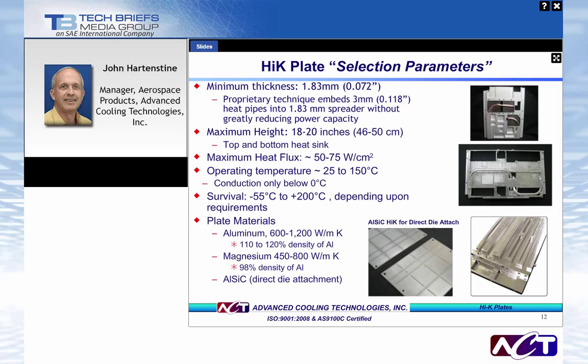Selection parameters for high-K plates include high-conductivity passive operation with similar heat fluxes. Plates as thin as 1.83 mm have been achieved without reducing overall power capacity. Maximum height is around 18 to 20 inches with heat pipes positioned across the plate from each other. Plate materials include aluminum, magnesium, and aluminum-silicon carbide. With aluminum, thermal conductivity of 600 to 1,200 W/m·K is achieved; with magnesium, 450 to 800 W/m·K. This technology is strongly used for conduction-cooled cards — heat pipes incorporated into the plates pull power off sensitive components deep within the card and transfer it with very low thermal resistance to the edge, into the card guides within a chassis.